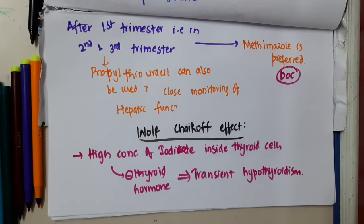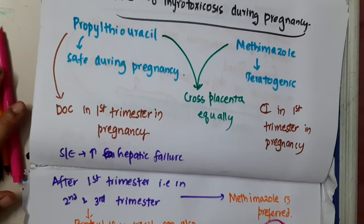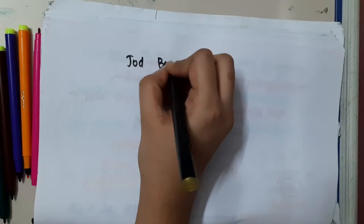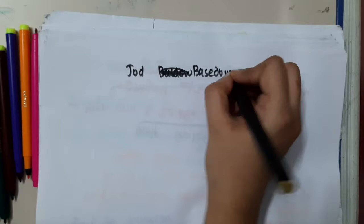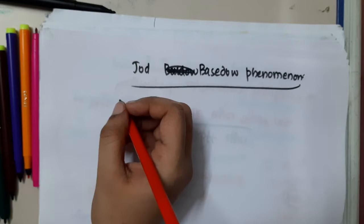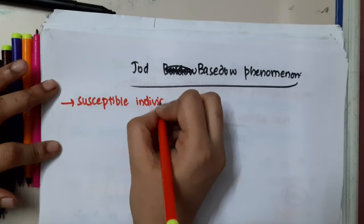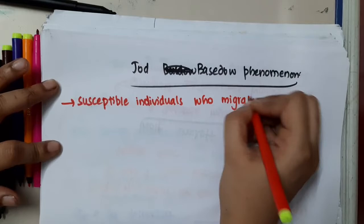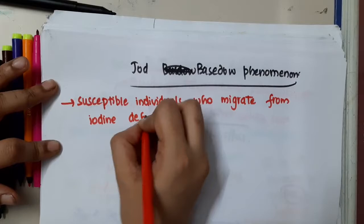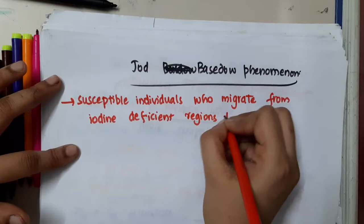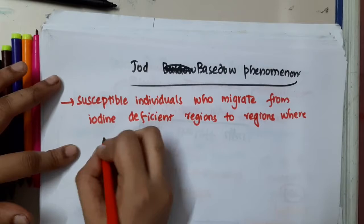Now, what about Jod-Beyesdow's effect? This is also a similar condition — the Jod-Beyesdow's phenomenon. This phenomenon is mainly seen in susceptible individuals who migrate from iodine-deficient regions to regions where iodine supply is normal.